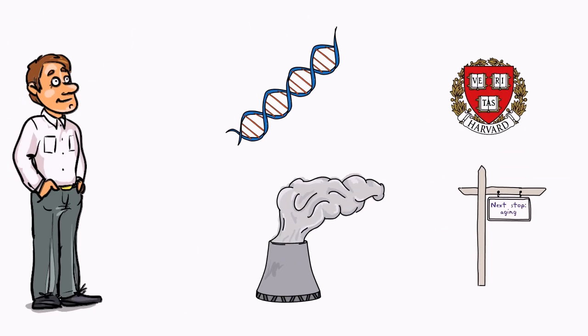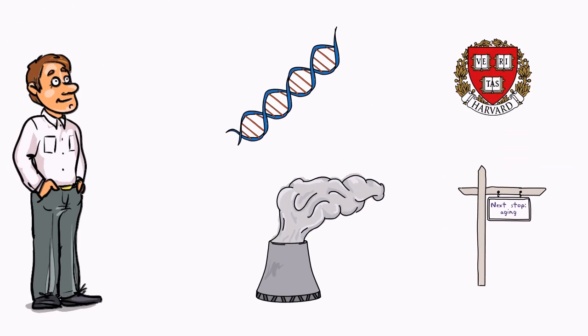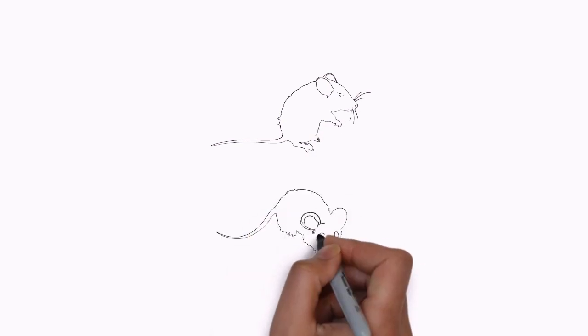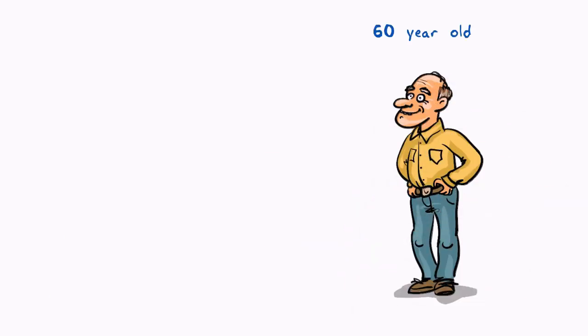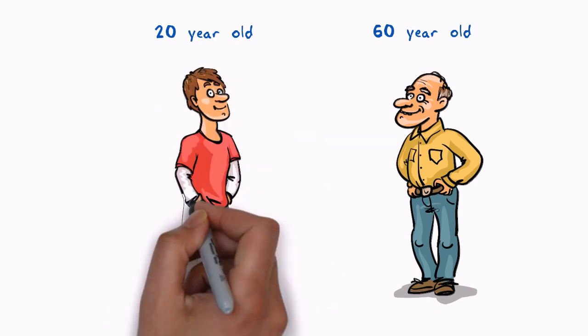but researchers at Harvard University have shown that some aspects can be reversed. Researchers say that they've been able to reverse the aging process in mice, using a chemical that in one week made two-year-old mice tissue resemble tissue of six-month-old mice. In human years, that's as if a 60-year-old's cells became more like the cells of a 20-year-old.